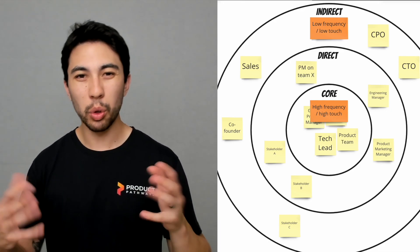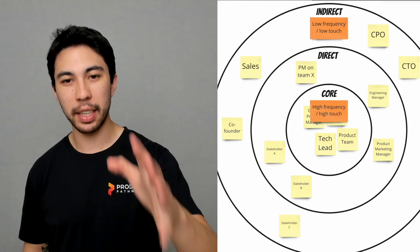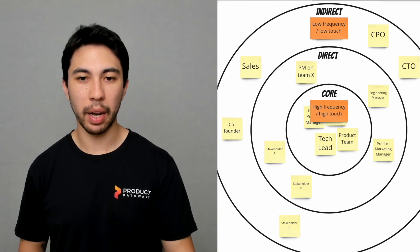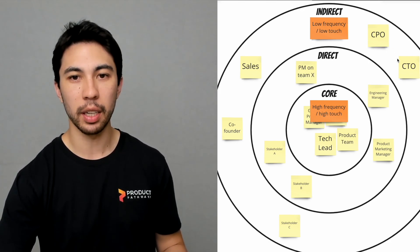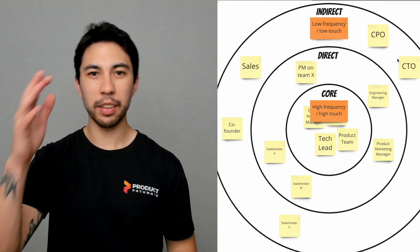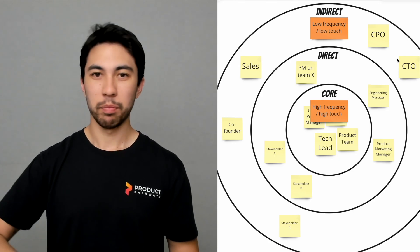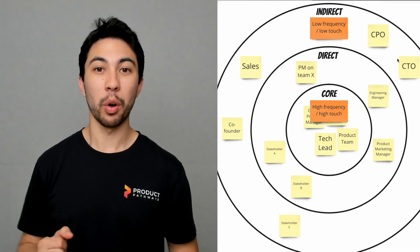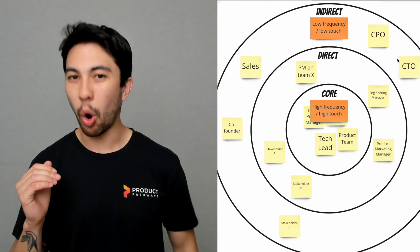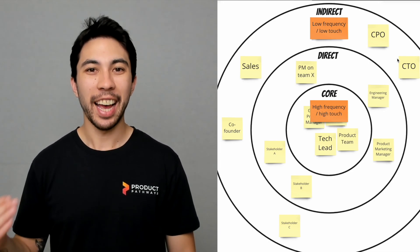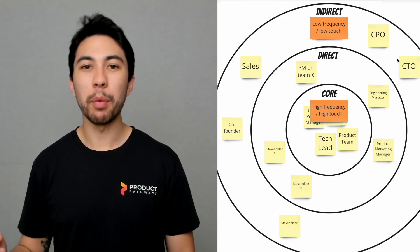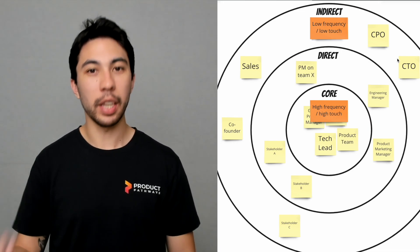So this is really useful when we're starting to look at our stakeholders. We can map them back against where they sit in the stakeholder map. If we have somebody who's far out here in the indirect and we have down next to them a bi-monthly one-on-one, then that probably doesn't make sense because they should be a low frequency and a low touch. So we might want to adjust that to be something else.